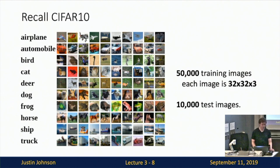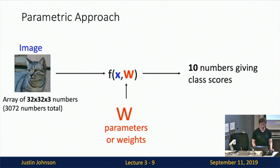As a quick recap, we've been working with the CIFAR-10 dataset — a standard benchmark for image classification containing 50,000 training images and 10,000 test images. Each image is 32x32 pixels with three scalar values per pixel for the red, blue, and green color channels.